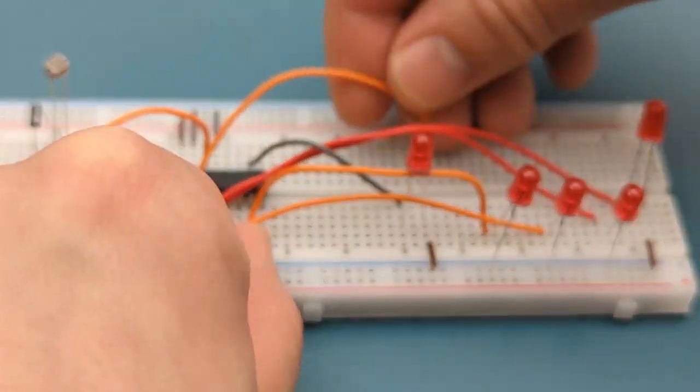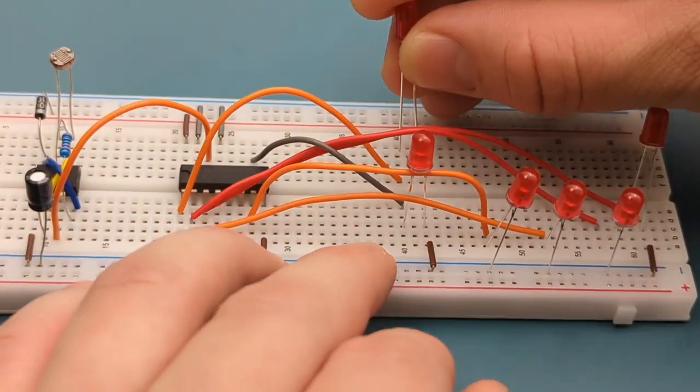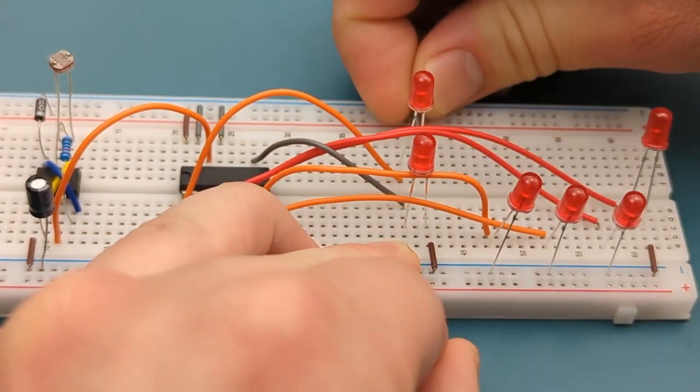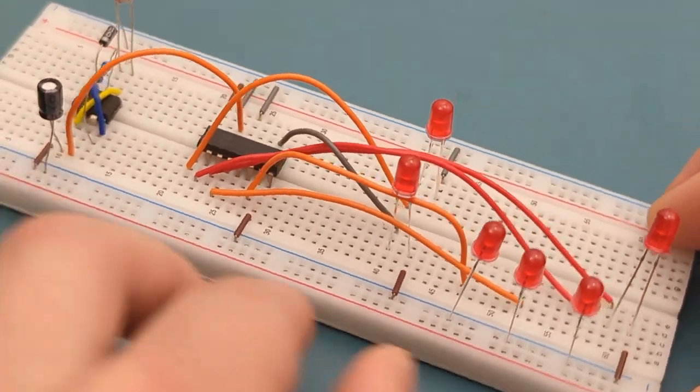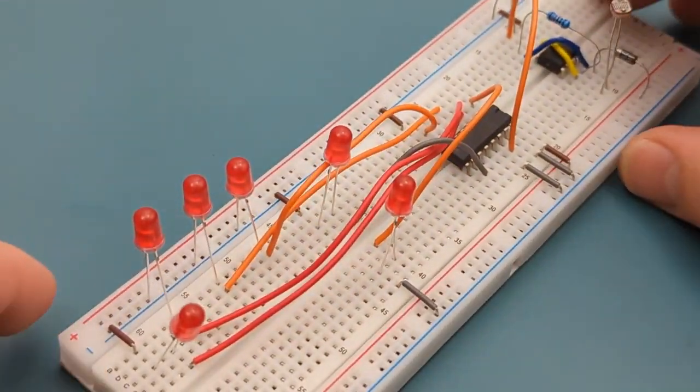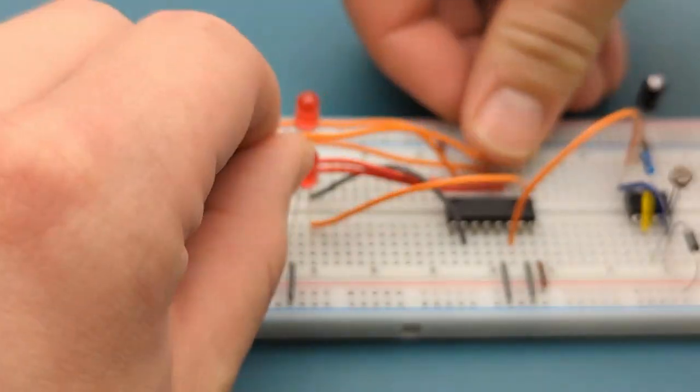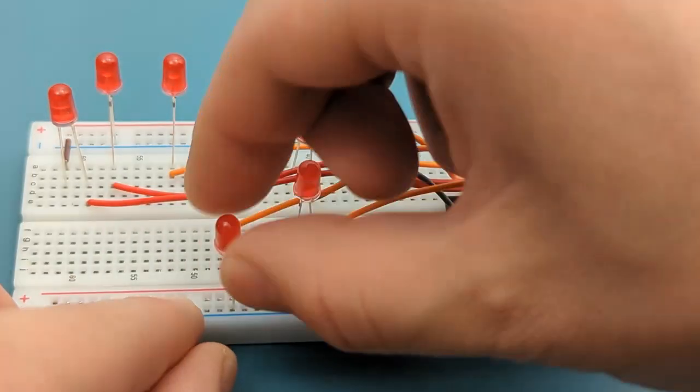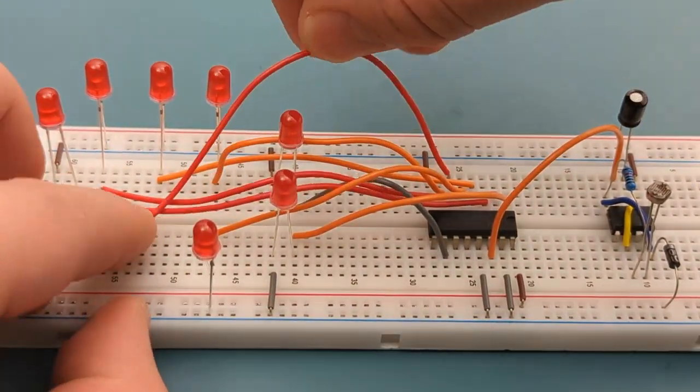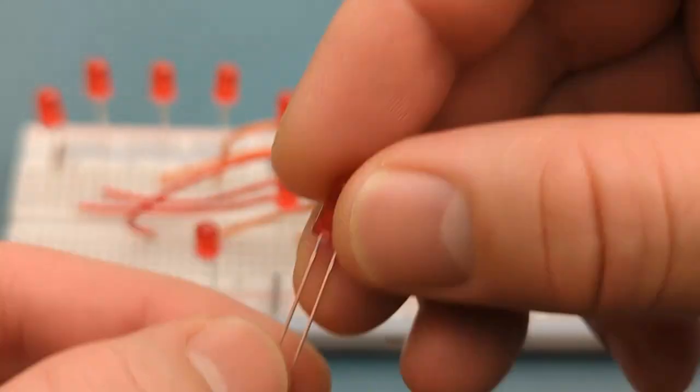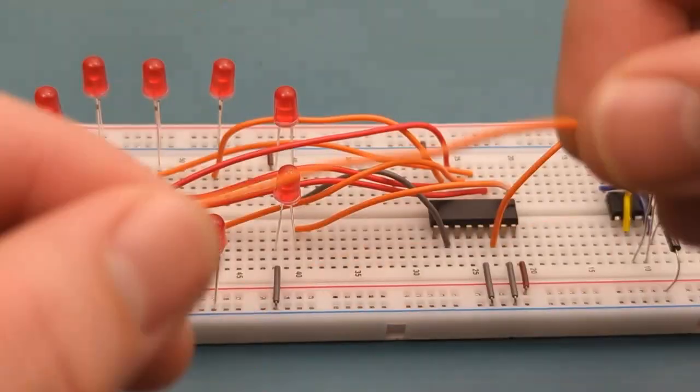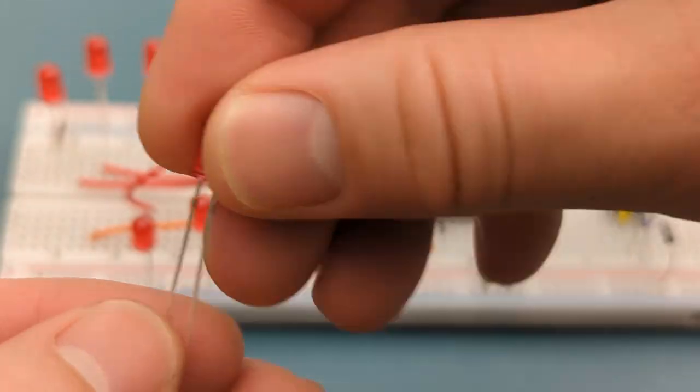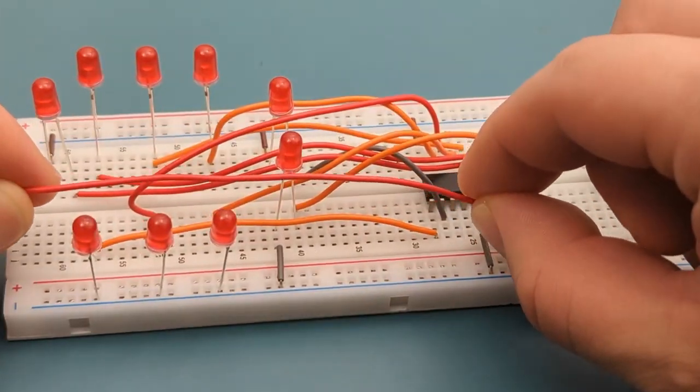Connect pin 1 to the sixth LED. Connect pin 5 to the seventh LED. Connect pin 6 to the eighth LED. Connect pin 9 to the ninth LED. Connect pin 11 to the tenth LED.